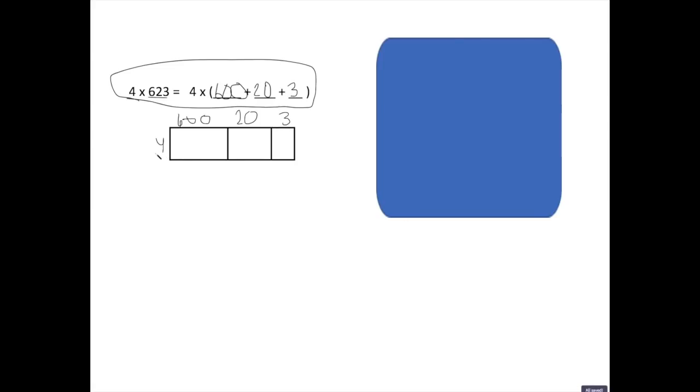So remember like we solved before, we did hundreds place, then tens place, then our ones place. I would like for you to go ahead and solve our partial products. 4 times 600, 4 times 20, and 4 times 3. Pause this video and go ahead and solve.